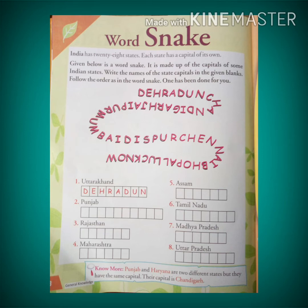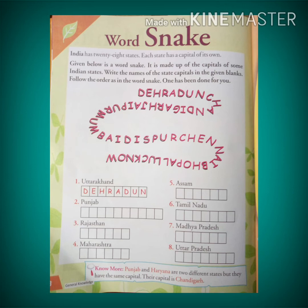Number four is Maharashtra — the capital of Maharashtra is Mumbai. Fifth one is Assam — the capital of Assam, found in the word snake, is Dispur.